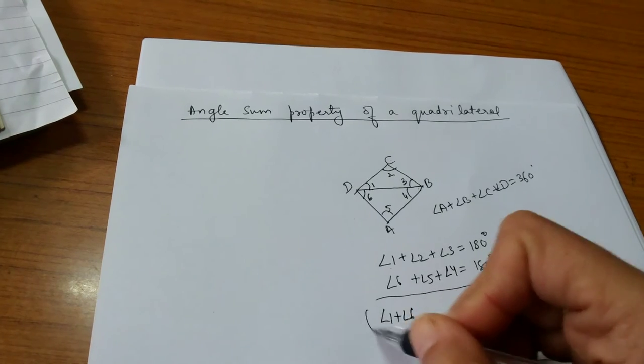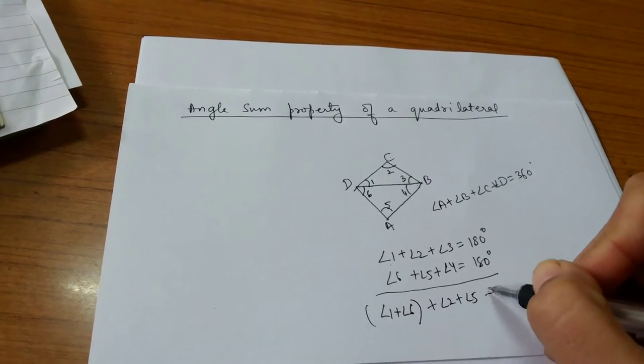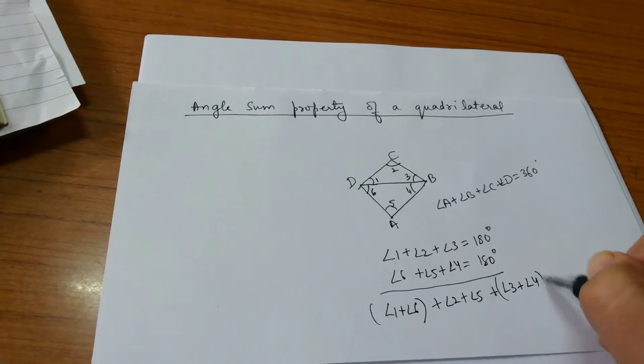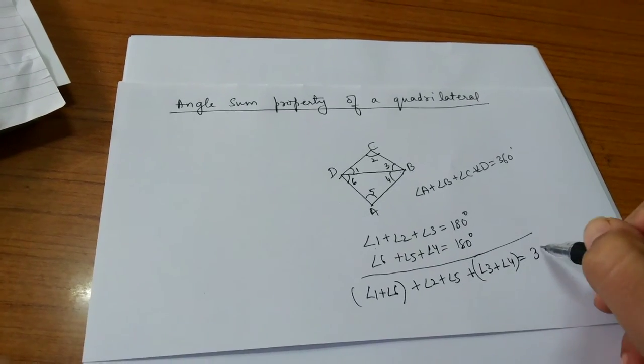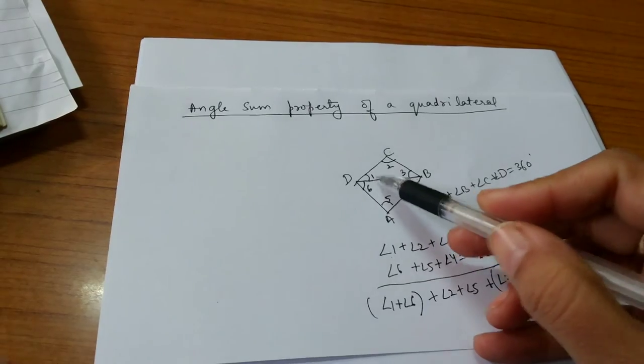Now add them: angle 1 plus angle 6 plus angle 2 plus angle 5 plus angle 3 plus angle 4 will be 180 plus 180, which equals 360 degrees. Now what is angle 1 plus angle 6?